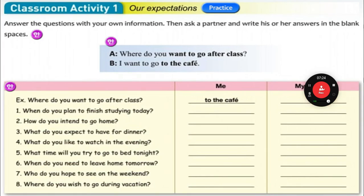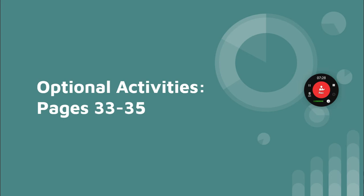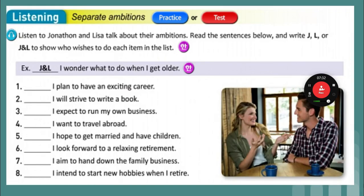We're going to skip self-practice and move to page 33. Page 33 is a listening exercise. Jonathan and Lisa are talking about their ambitions. Ambition is something you want to have happen in your life. Read the sentences below and write J for Jonathan, L for Lisa, or J&L — that ampersand means 'and' — to show who wishes to do each item on the list. Write J if Jonathan says it, L if Lisa says it, or J and L if both agree. Listening: separate ambitions.